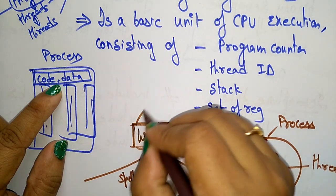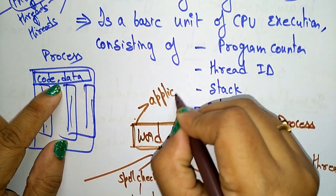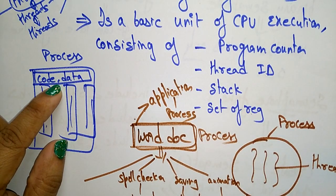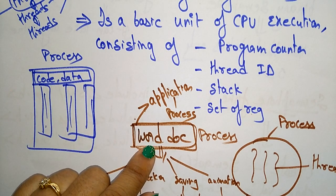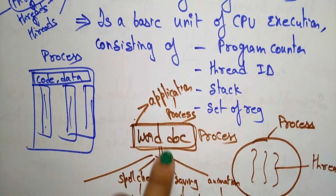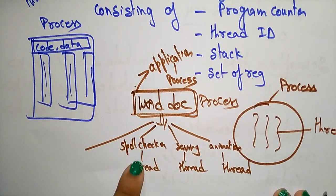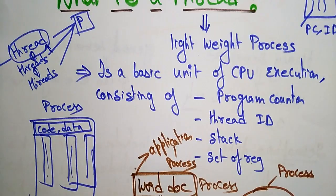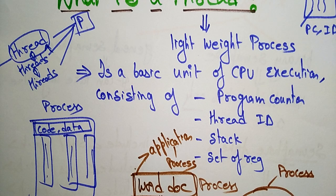An application that is running is called a process, and a process can have multiple threads. A Word document is an application — you call it a process. Within that application you have different tasks, and those tasks you call threads. I hope you understand the difference between a thread and a process.